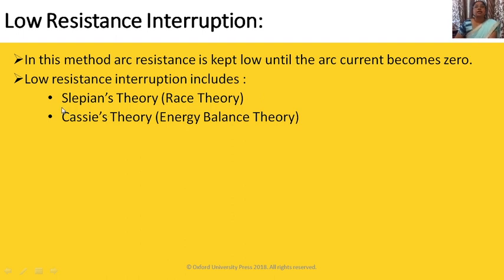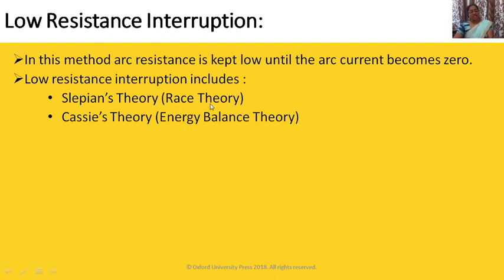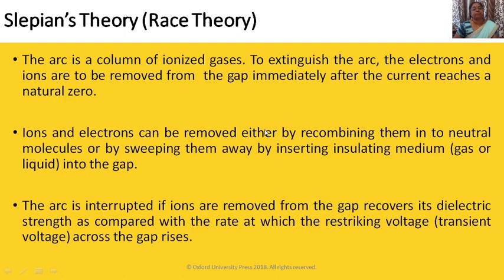Many researchers have proposed theories related to the low resistance interruption method. Out of those, two theories are important: Slepian's theory and Cassie's theory. Slepian's theory is called the race theory, while Cassie's theory is called the energy balance theory. Now we will switch to Slepian's theory — the first theory, called the race theory.